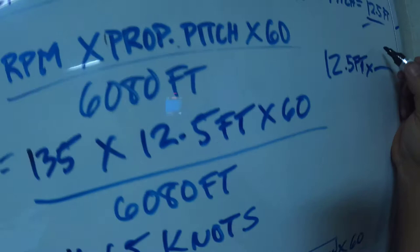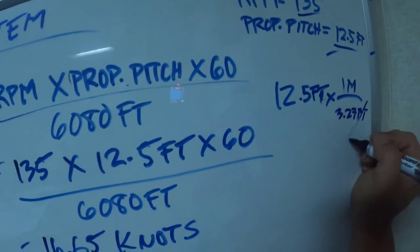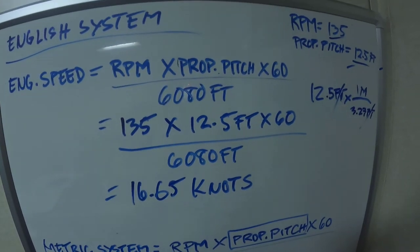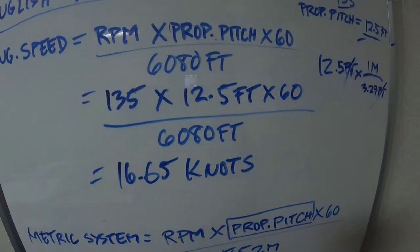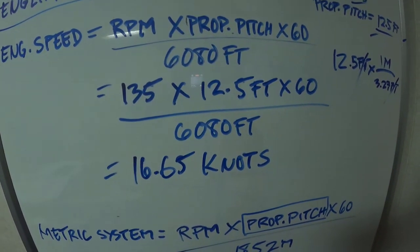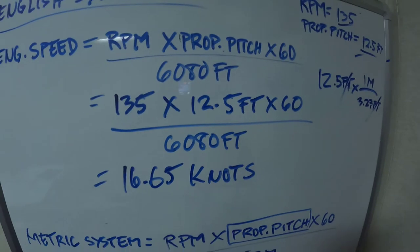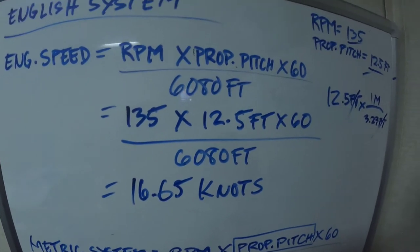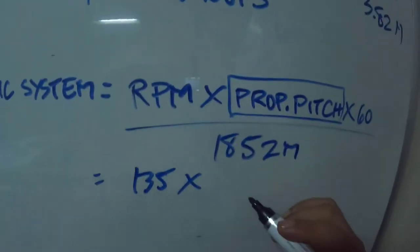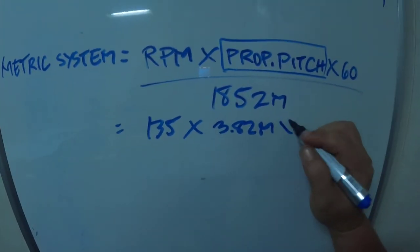In 1 meter there is 3.27 feet. So 12.5 feet times 1 divided by 3.27 feet equals 3.82 meter. This is what we'll use in the metric system: 3.82 meter times 60 divided by 1852.